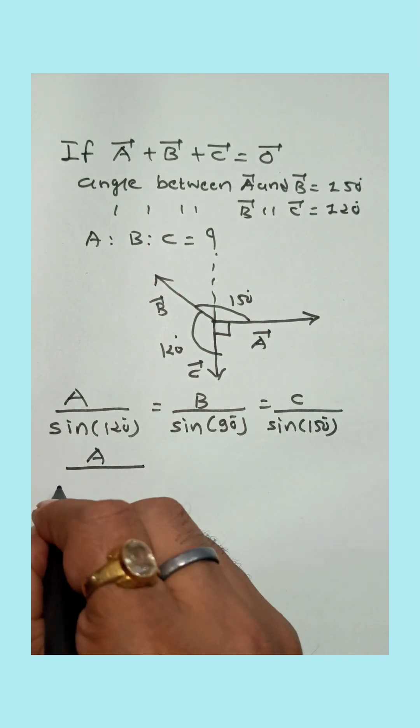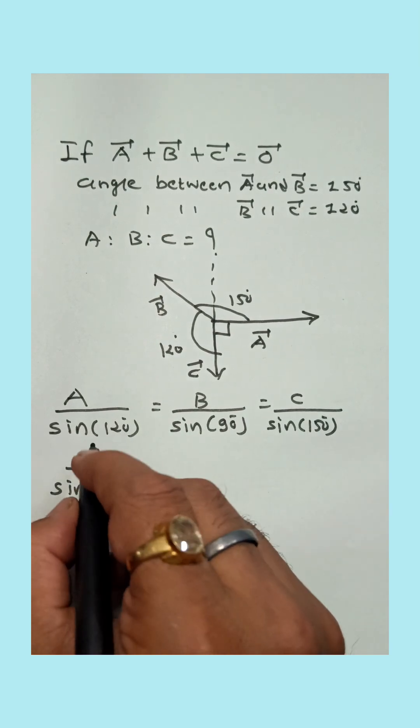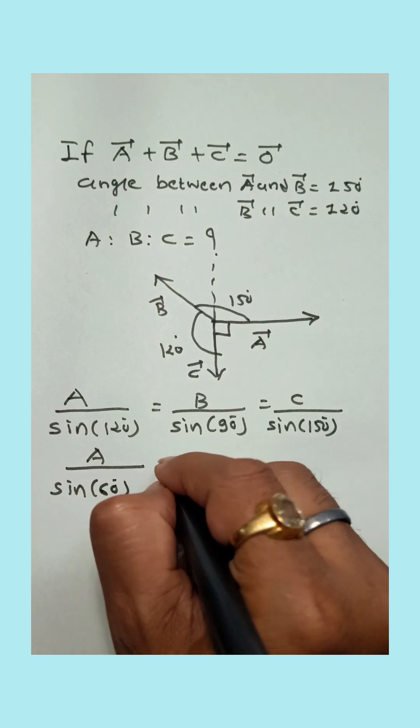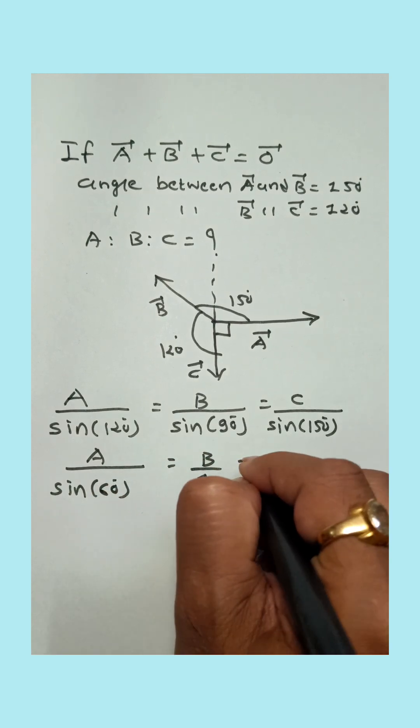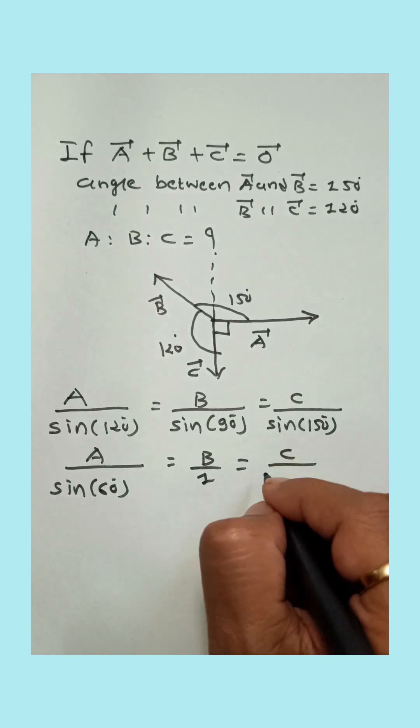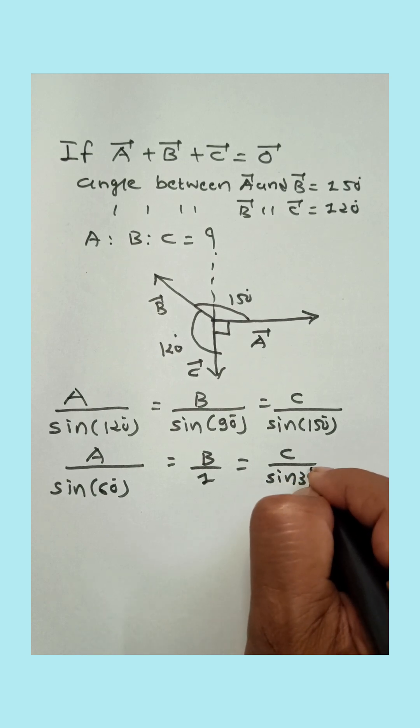So A upon sine 120 can be written as sine 180 minus 60, so it is sine 60. Sine 90 is 1. Sine 150 can be written as sine 180 minus 30, so sine 30.